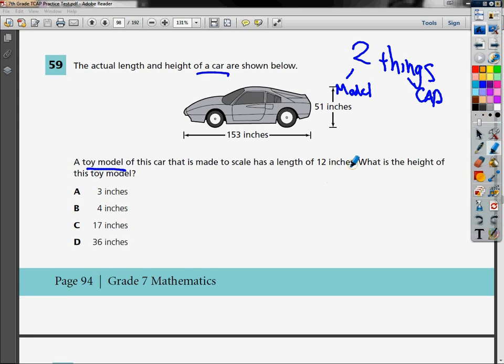And if I look carefully, I can find one, two, three numbers. Three numbers. I'm looking for the height, so I'm looking for that fourth number.